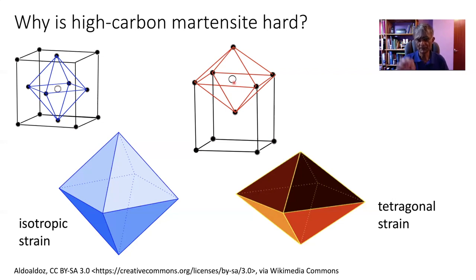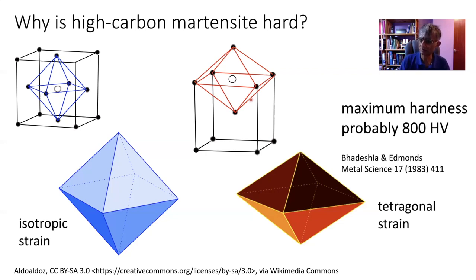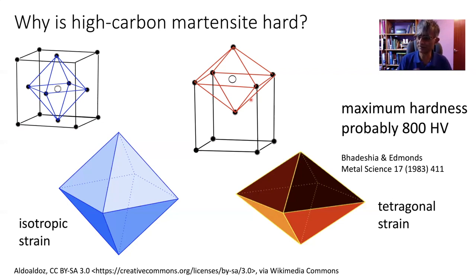Of course, we can keep on putting more and more carbon inside the martensite, but you reach a point of diminishing returns. The maximum hardness that can be achieved by putting carbon into solid solution inside the body-centered cubic or body-centered tetragonal lattice is of the order of 800 to 900 Vickers hardness.